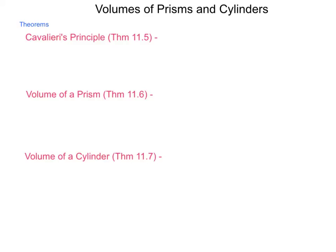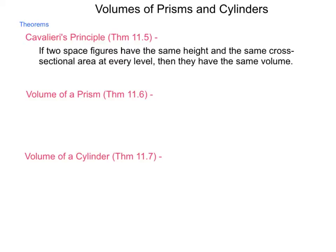With that concept in mind, we're going to look at a few theorems here. The first is Cavalieri's Principle, which we call Theorem 11.5 in this course of study. It states: if two space figures have the same height and the same cross-sectional area at every level, then they have the same volume.